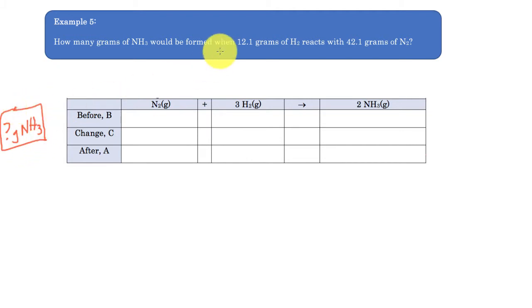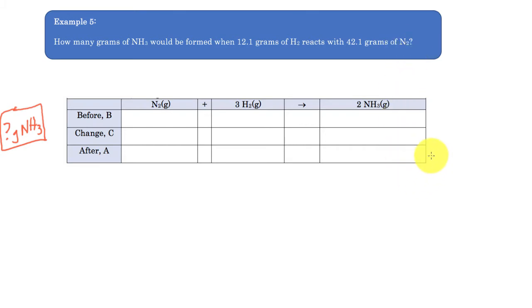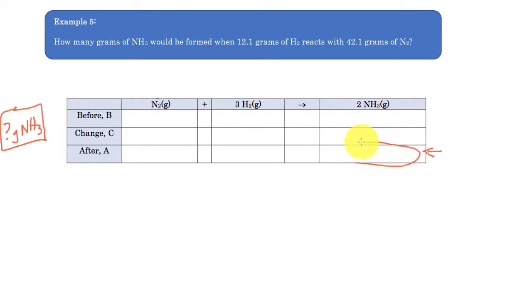We look at what information they give us. The ammonia is going to be formed when 12.1 grams of hydrogen reacts with 42.1 grams of nitrogen. Our goal is to find this amount of ammonia at the end of the reaction — the after part. We're looking for the mass of ammonia formed when we're complete. They give us 12.1 grams of hydrogen and 42.1 grams of nitrogen.